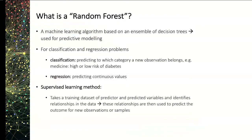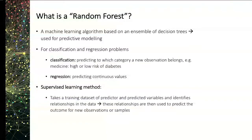Random forests are a supervised machine learning method, which means the algorithm takes a training dataset with predicted and predictor variables, learns the underlying patterns and relationships in the data, and based on this it allows predicting the category or value for a new observation. It was first described by Breiman in 2001, so it's a fairly new method compared to other methods that are often used.